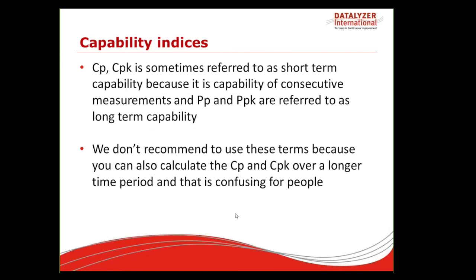To add more confusion: some people say CP and CPK are short-term capability, because they are based on estimated standard deviation from consecutive measurements, while PP and PPK are long-term. We strongly recommend not using these definitions, because you can also report CP and CPK over a long-term period — for example, one year of data. These definitions circulate on the internet and are extremely confusing, so we recommend avoiding them.